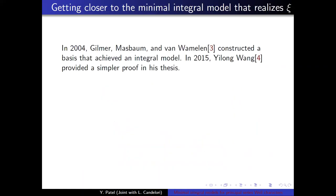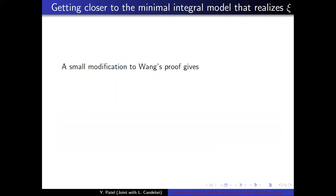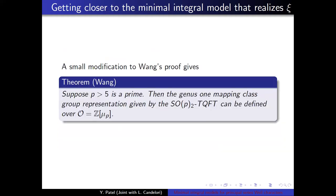So in 2004, Dr. Gilmer, Dr. Mossbaum, and Dr. Van Wall-Mellon, constructed a basis that achieved an integral model. And in 2015, Dr. Yilong Wong provided a simpler proof in his dissertation. That's where I learned the technique. And this is what they both proved differently. Suppose p is an odd prime greater than 5, then the genus 1 mapping class group representation given by this TQFT can be defined over this ring, where the ring varies if the prime is congruent to 3 mod 4 or 1 mod 4. In studying this proof, just treating the TQFT just as SL2 of Fp, it can be modified to show that it achieves integrality of Z adjoined with the principal root of unity.